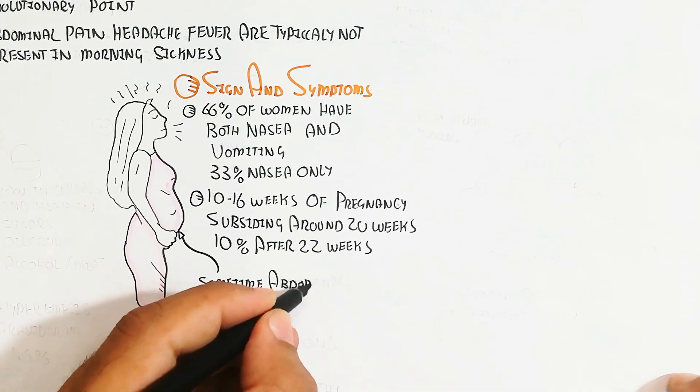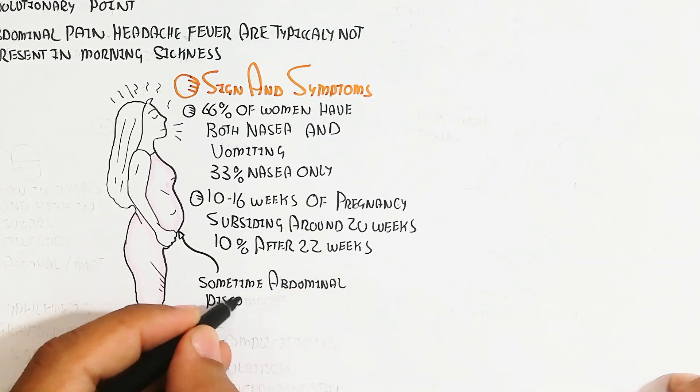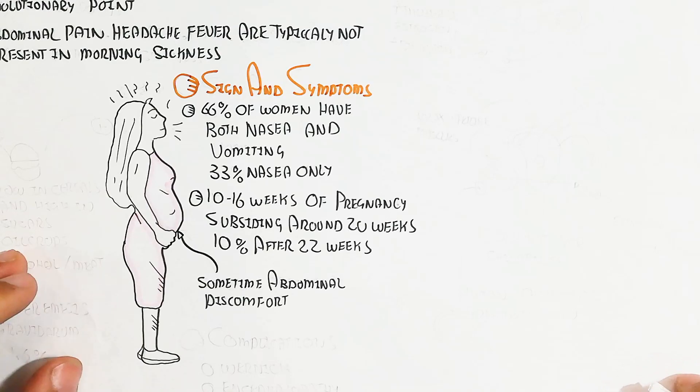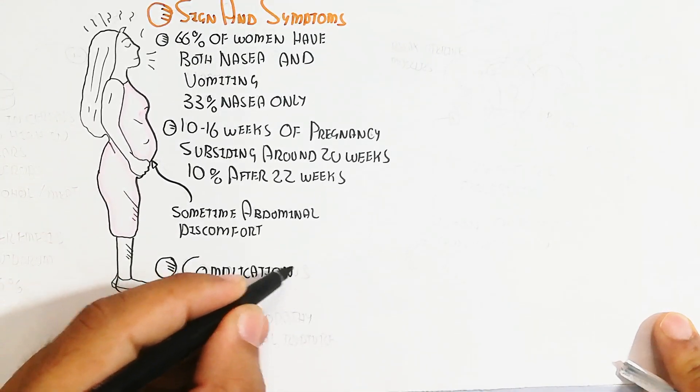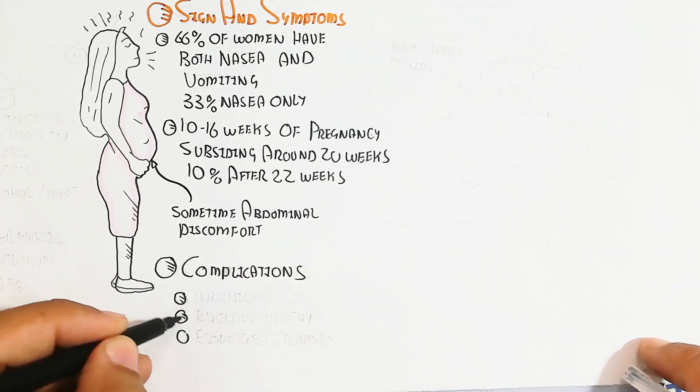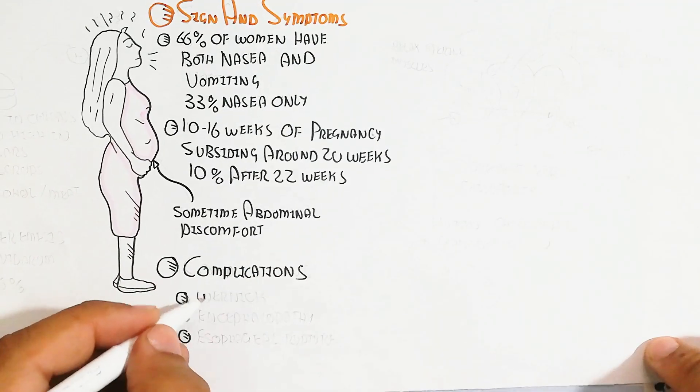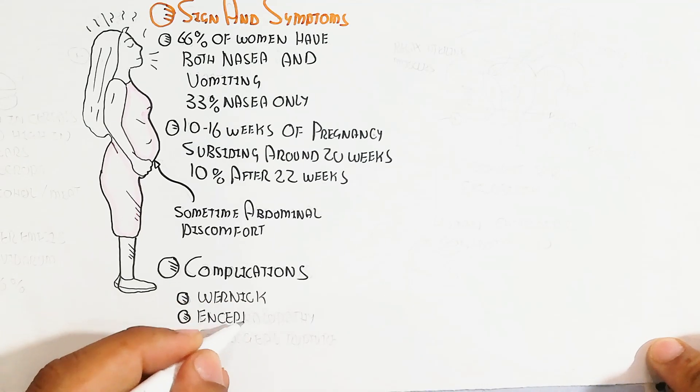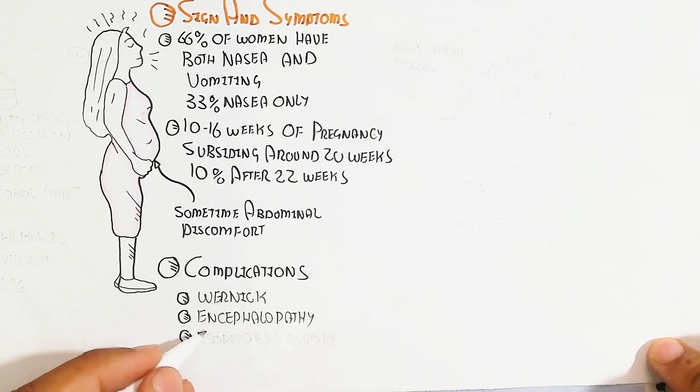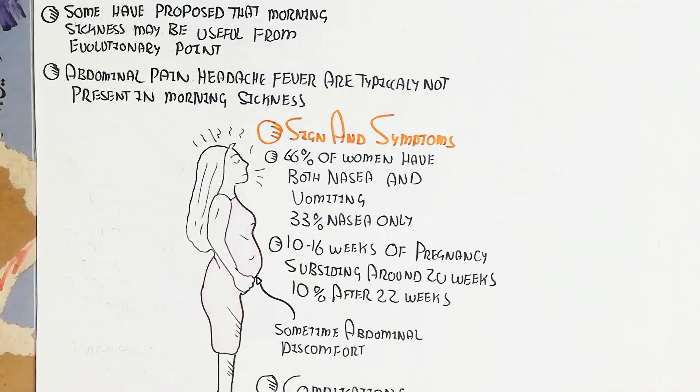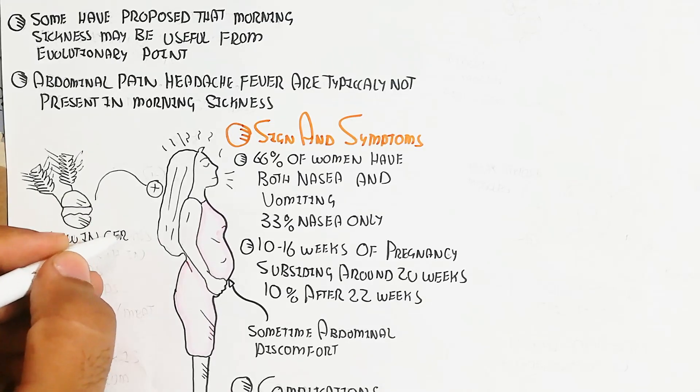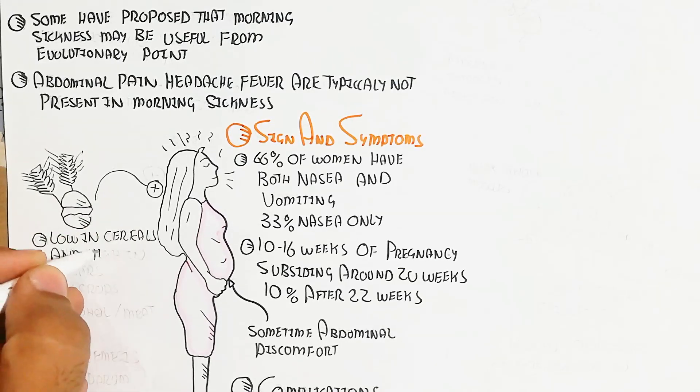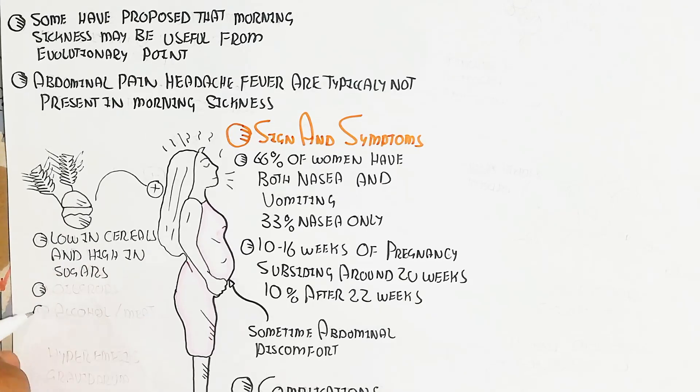Subsiding means decreasing. Human chorionic gonadotropin is released from the chorion of the placenta. Complications can include abdominal discomfort and can lead to Wernicke encephalopathy and esophageal rupture because of continuous vomiting. Food low in minerals and high in sugars can also lead to vomiting.